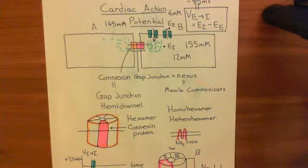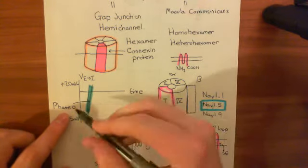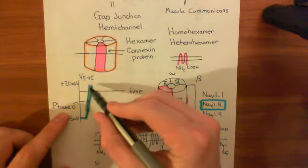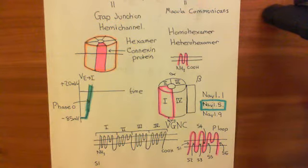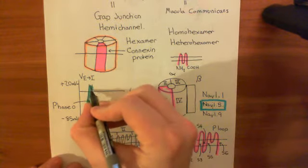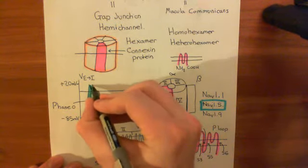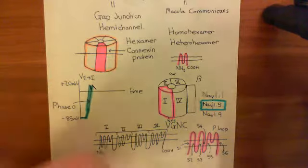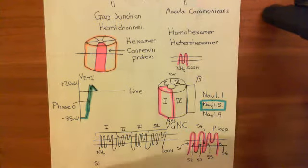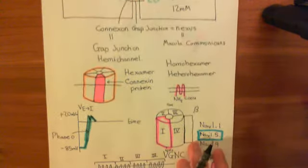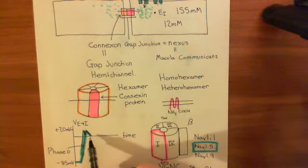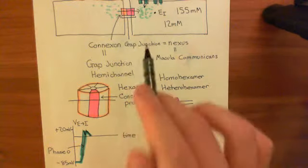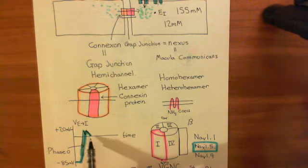These voltage-gated potassium channels are activated by phase zero — the rapid depolarization. They've opened just as the voltage-gated sodium channels have closed, allowing potassium to move out and causing repolarization. However, these channels are extremely transient in how long they stay open — they open for an instant and then shut. In that time, they don't conduct that much potassium, so you only get repolarization back to around zero millivolts before these channels close. So they only produced this little blip in the action potential.